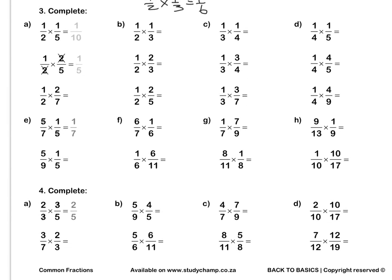Question 3. A half times a fifth is a tenth. Now, a half times two fifths — when we multiply fractions, we always first simplify in our question. So we divide any top and any bottom by the same number. 2 divided by 2 is 1, and 2 divided by 2 is 1. Then we multiply out and we get one fifth.